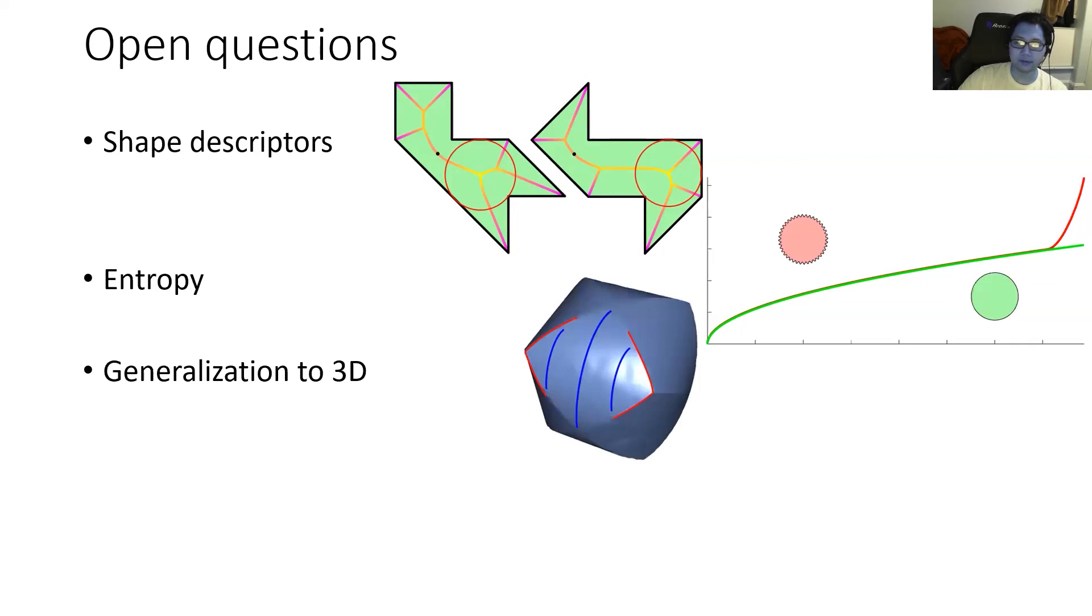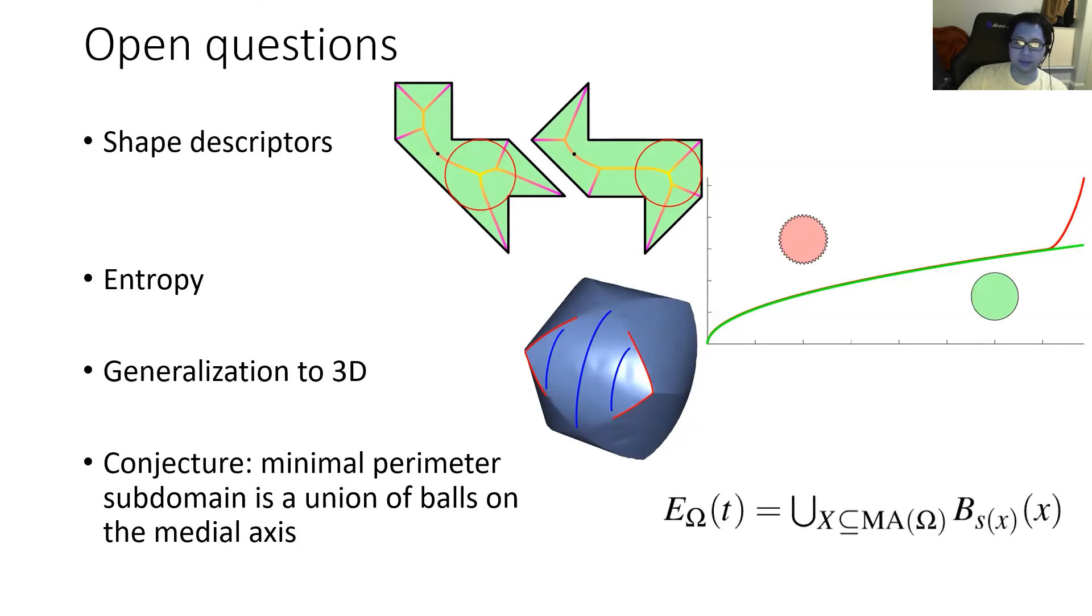An obvious extension of this work is, of course, bringing it to 3D. A naive extension would easily produce upper bounds to the profile at the cost of computing the medial surface. The 3D setting is more complex, however, since area-minimizing surfaces are not necessarily spherical anymore. Some form of non-linear optimization could be done to further tighten these bounds. Lastly, we have this conjecture for the 2D setting that we didn't manage to prove, but we haven't found any counter examples for either, which is that the minimal perimeter subdomain can always be described as a union of balls centered on the medial axis. Proof of this would reduce the problem definitively from 2D to just 1D.